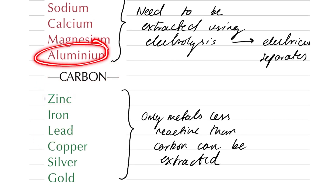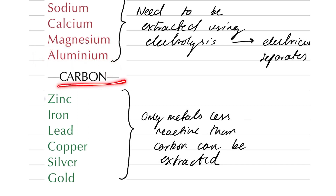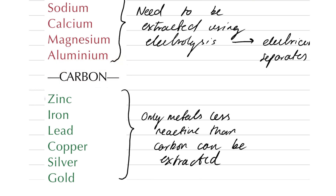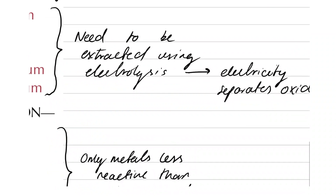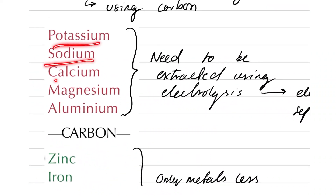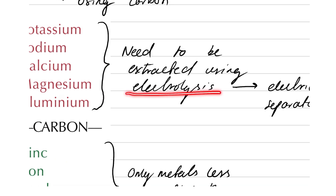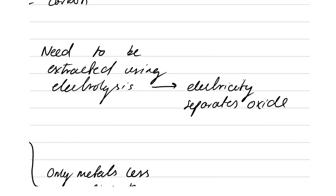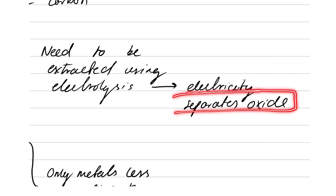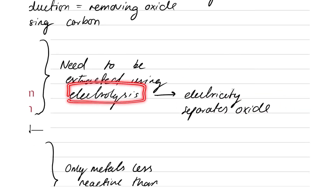So, how do we extract potassium, sodium, calcium, magnesium, and aluminium from their ores? We need to use a method called electrolysis. Electrolysis simply means electricity separating the oxide — electricity is used to break down something. And that's electrolysis, which we'll learn about later.